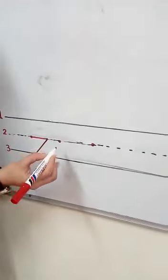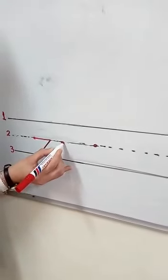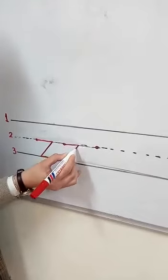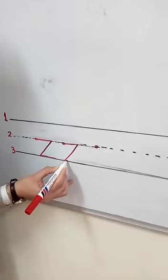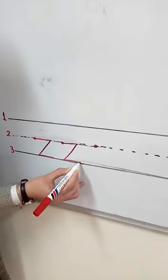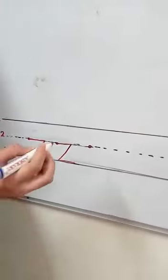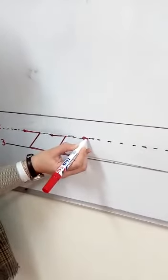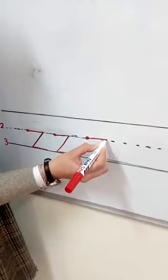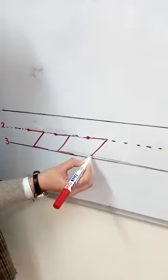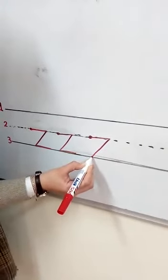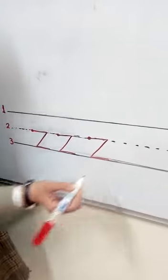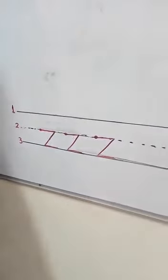Start from the dot. Dash on the line. Sloping line. Another dash. One more time: from the dot, dash on the line, sloping down, and another dash on the line. Thank you.